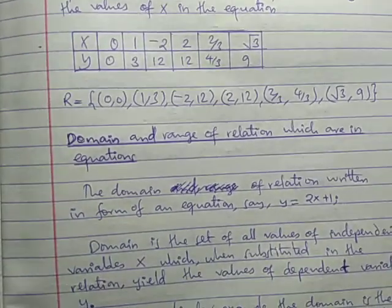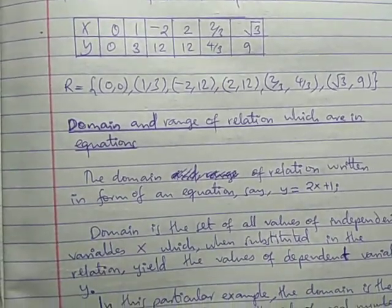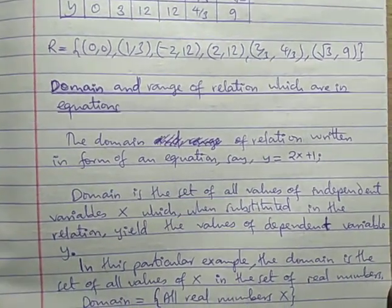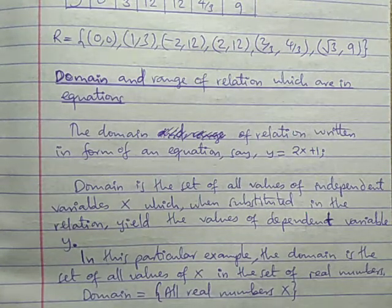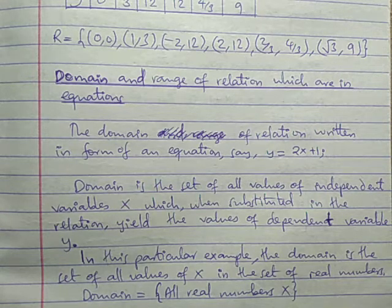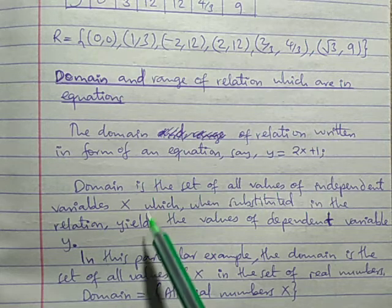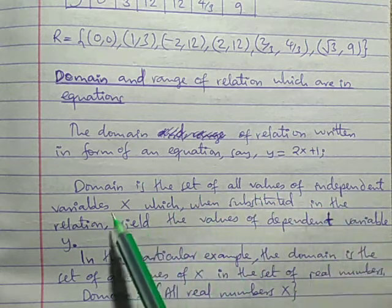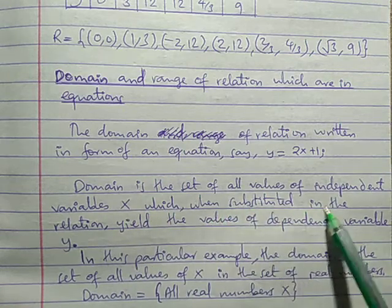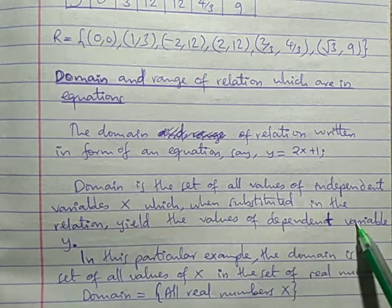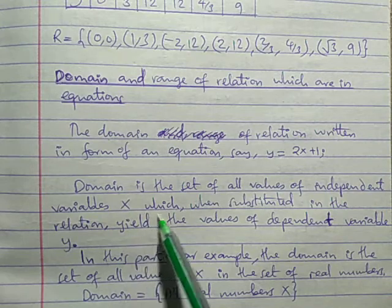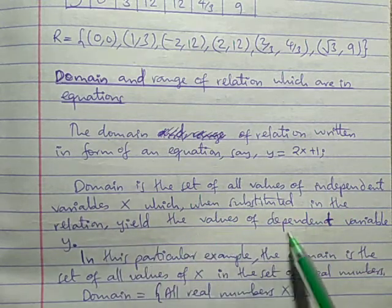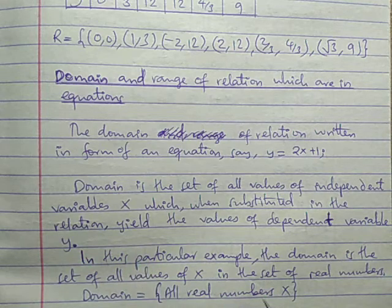Sometimes you are given a question where the domain and range still need to be determined. Domain ni values of X which can produce Y. Range ni values of Y which can produce X. So domain is the set of all values of independent variable X which, when substituted in the relation, yield the values of dependent variable Y.